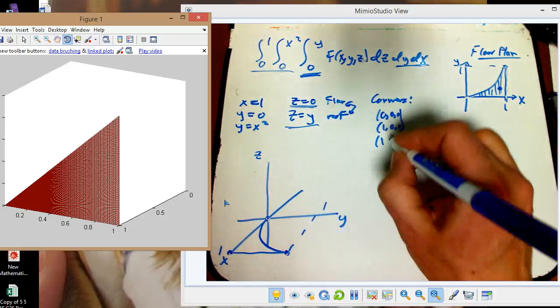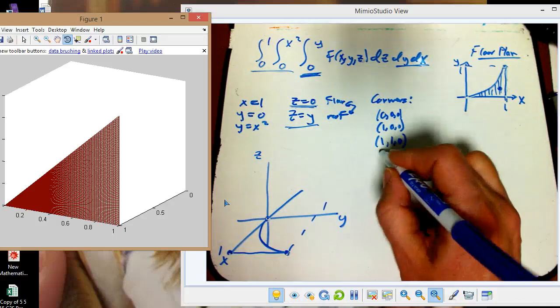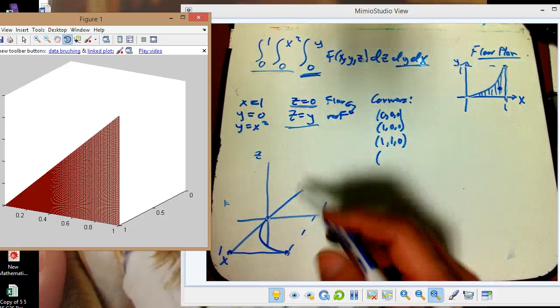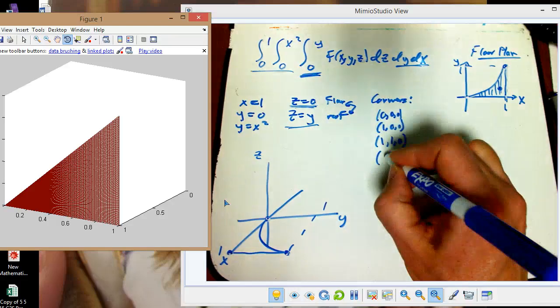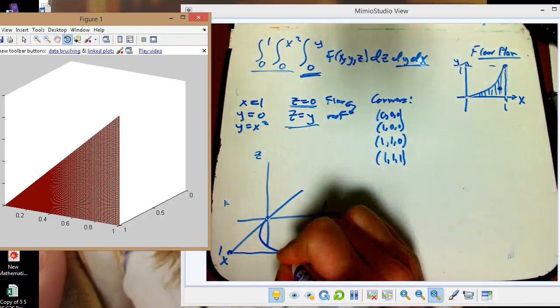1, 0, 0. Sorry, 1, 1, 0. Not bad. And there's just one more corner. And that's where you're standing at this part of the floor plan. x equals 1, y equals 1. And instead of choosing the floor, you choose the roof. And that's 1, 1, 1. So that's up here.